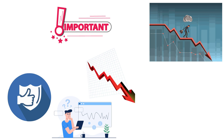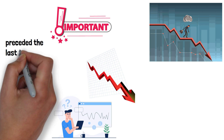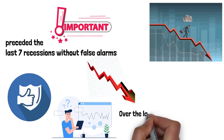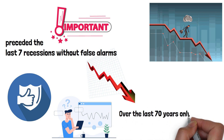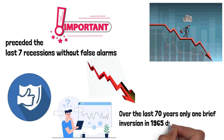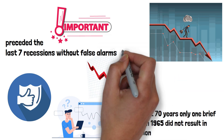However, inverse yield curves have preceded the last seven recessions without false alarms. Over the last 70 years, only one brief inversion in 1965 did not result in a recession. However, five years after this, a second inversion occurred and a recession followed. One false positive in 70 years, and essentially spot-on since the 1980s — it's a pretty strong track record.